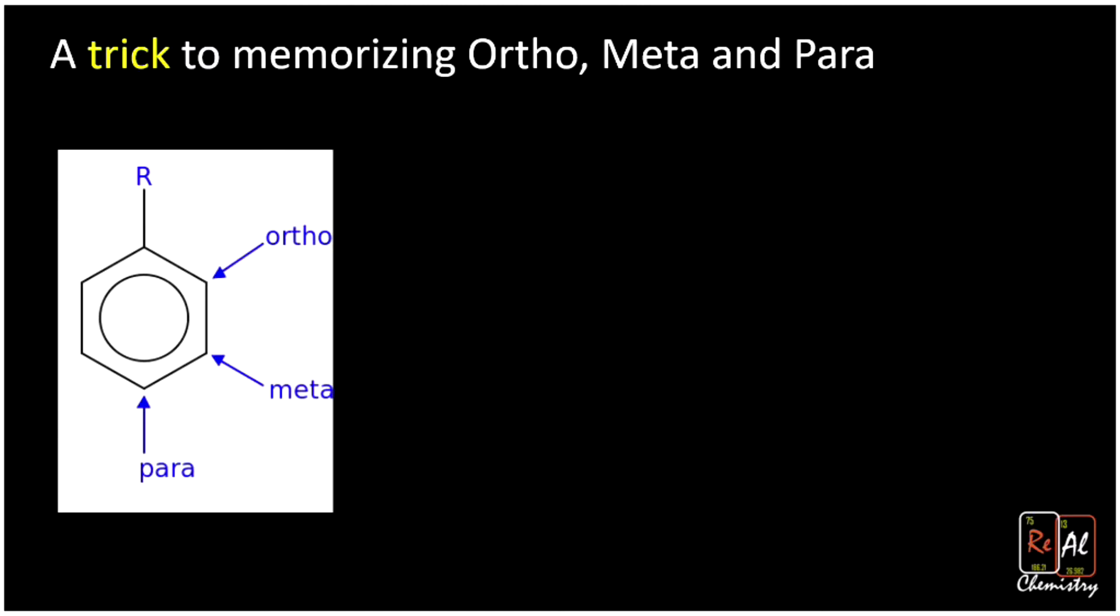But here's a quick trick. When we think about ortho, meta, and para, they're designating positions on the benzene ring. Remember that R is always our first group—that's the group that has the number one in our substituents.